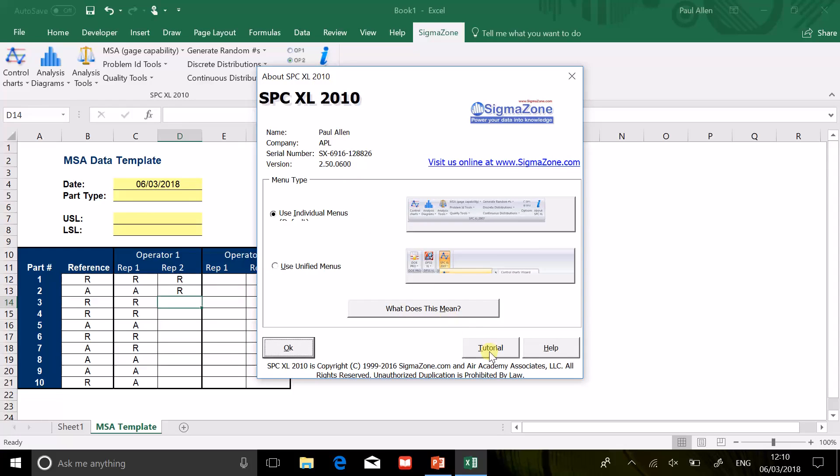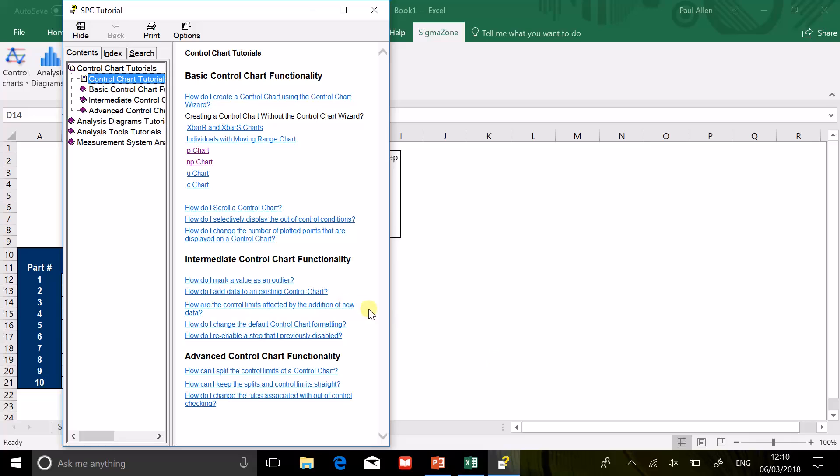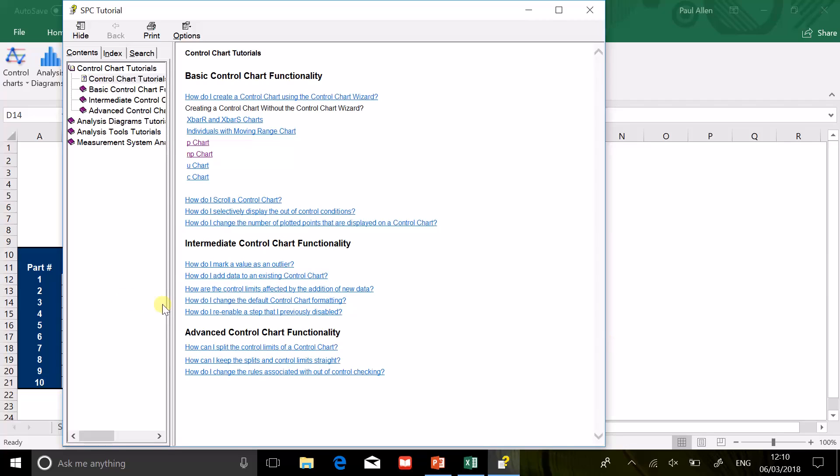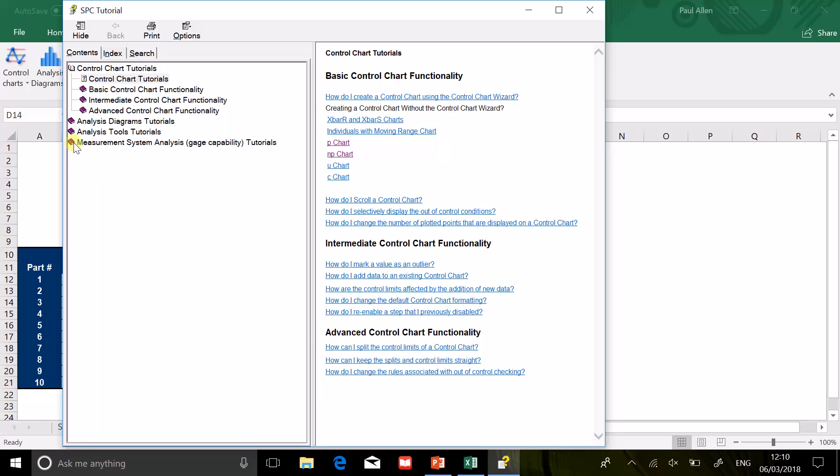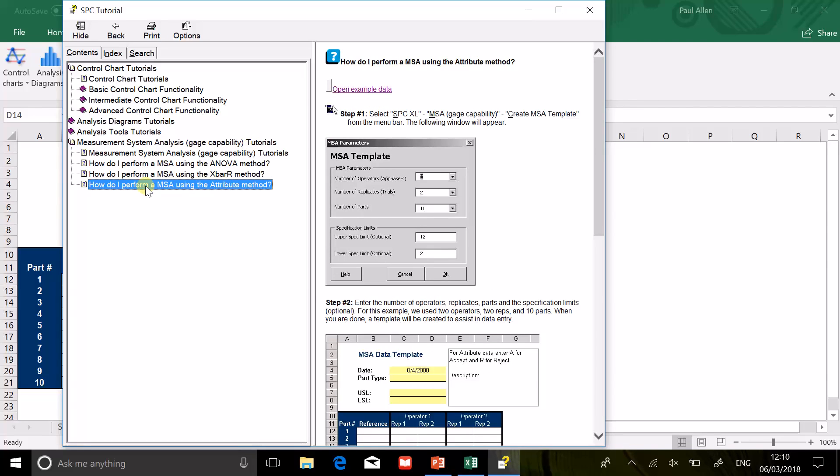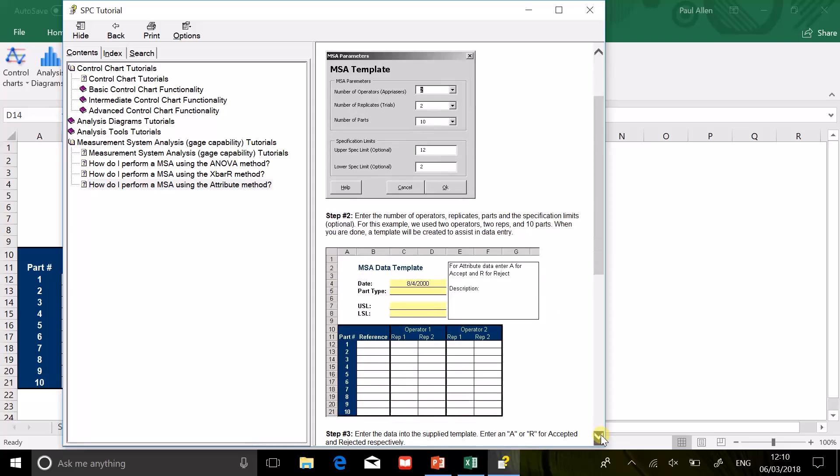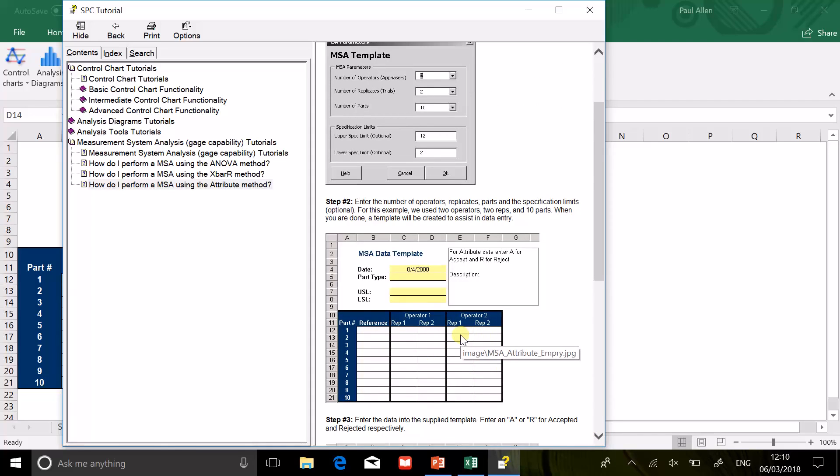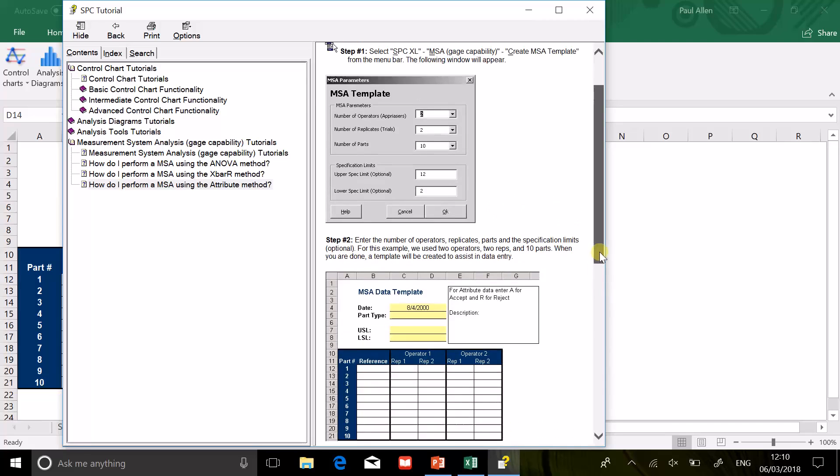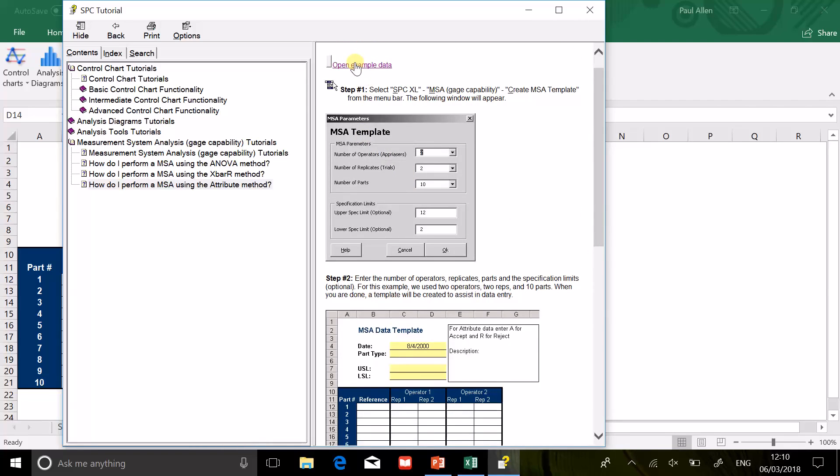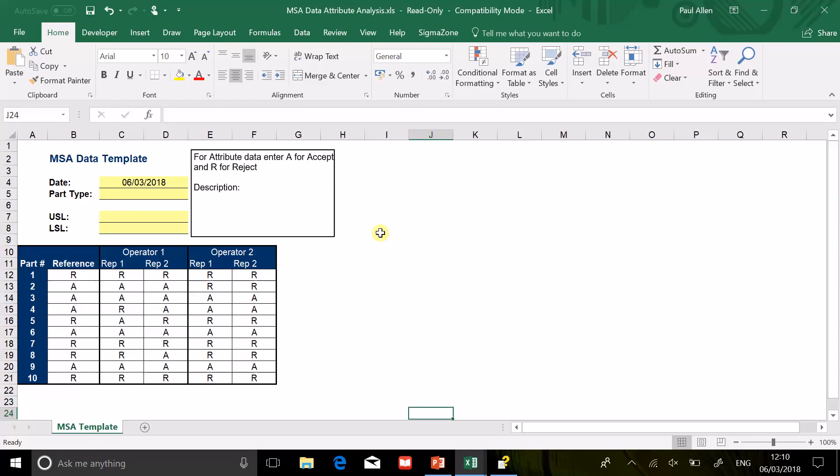I'm not going to type all those in; I'm going to take the opportunity just to show you where the help and the tutorial is on SPC Excel. If I go to About here and I go Tutorial, then there's a set of tutorials here - one of them is MSA. If I drop that list down on the bottom there's an attribute version there. There's an example data set here, so if I just click on that it'll open me a table that's completed.